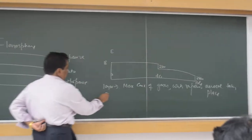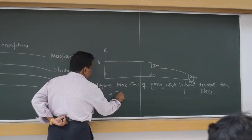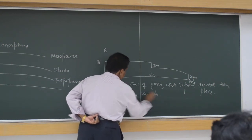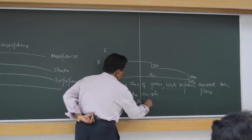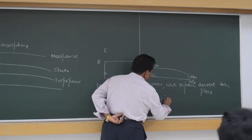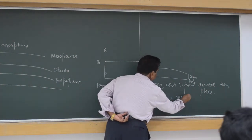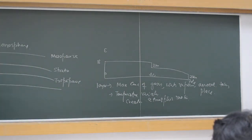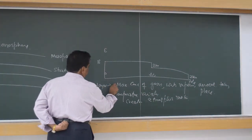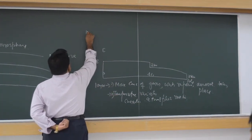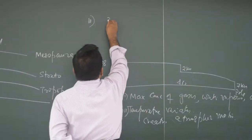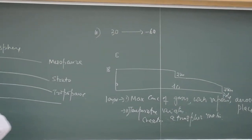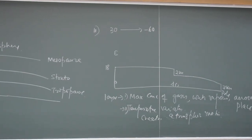So because of this concentration, the temperature variation creates atmospheric motion. So what is the temperature variation? It starts with 30 degrees and goes up to minus 56 degrees. This is the temperature variation.